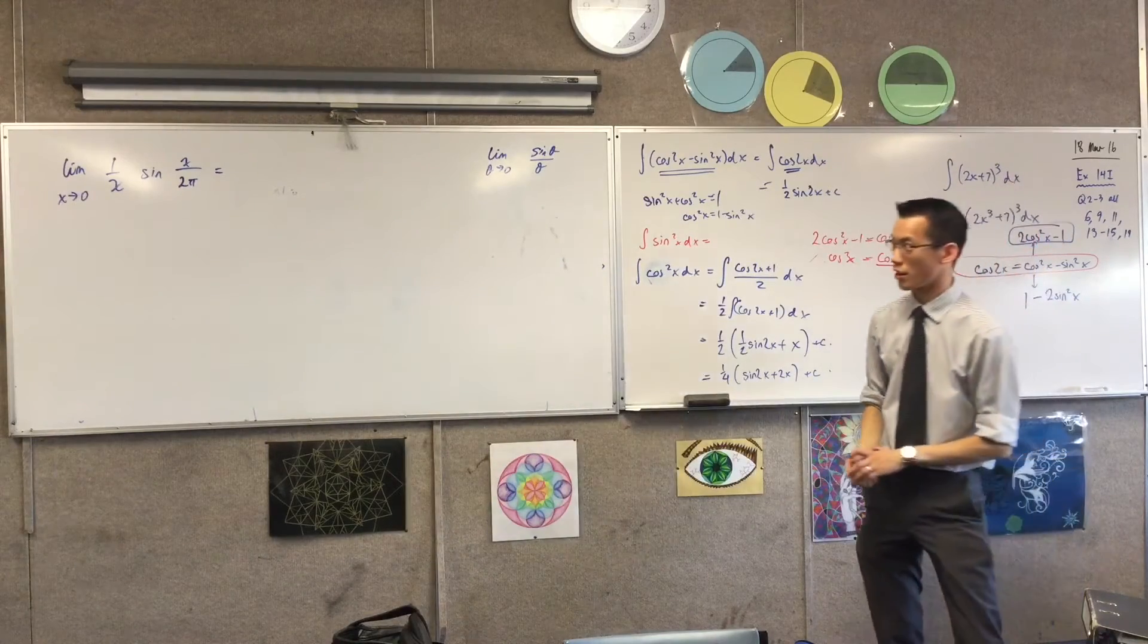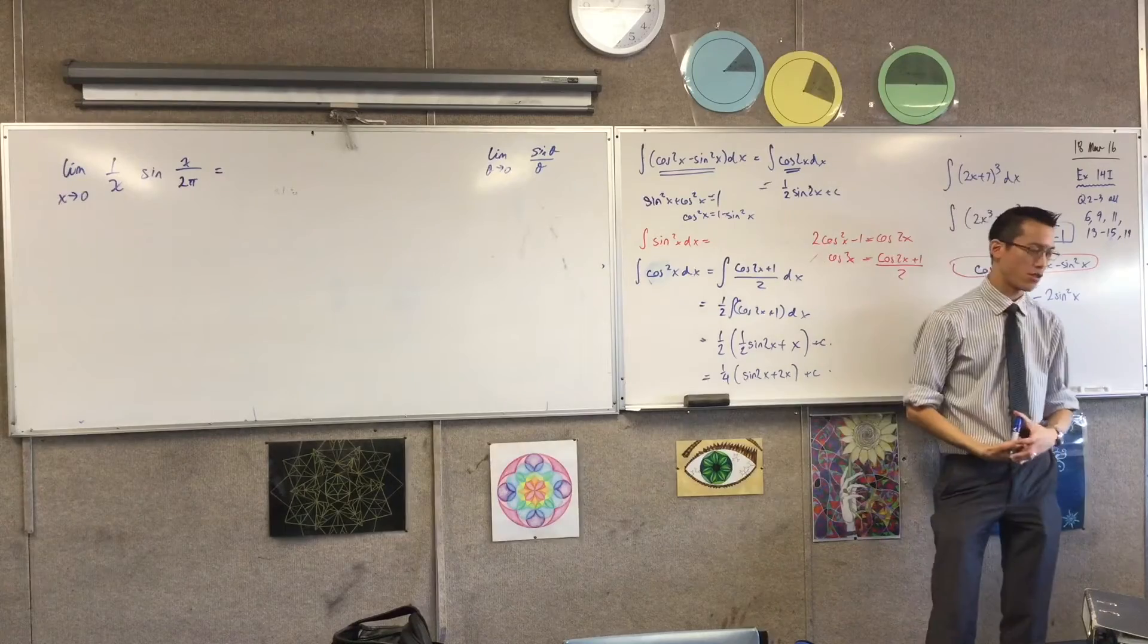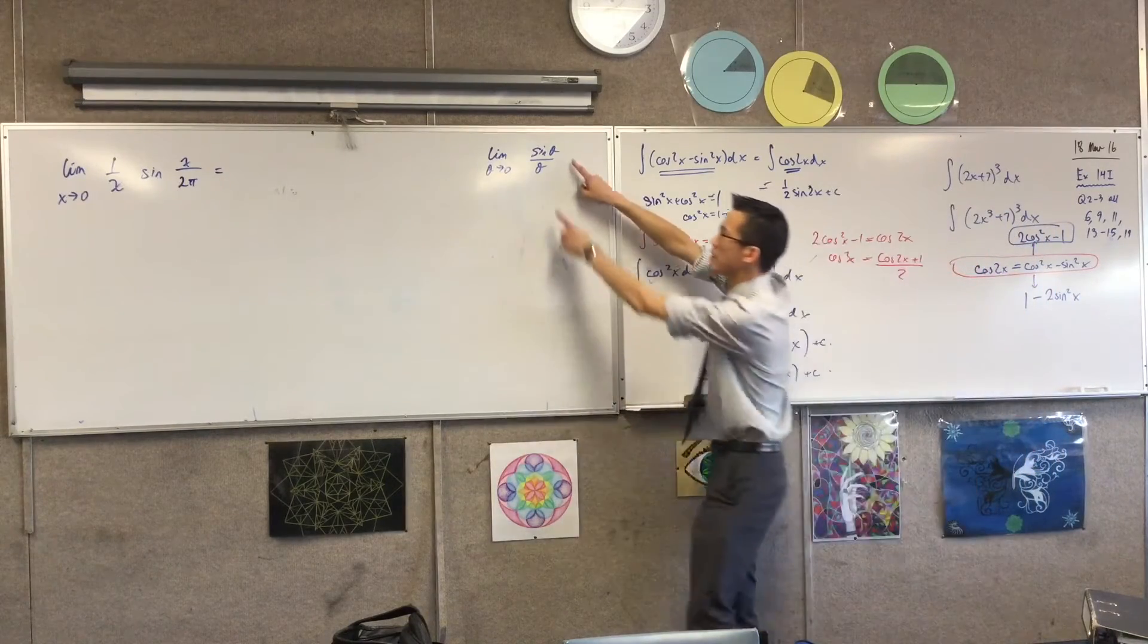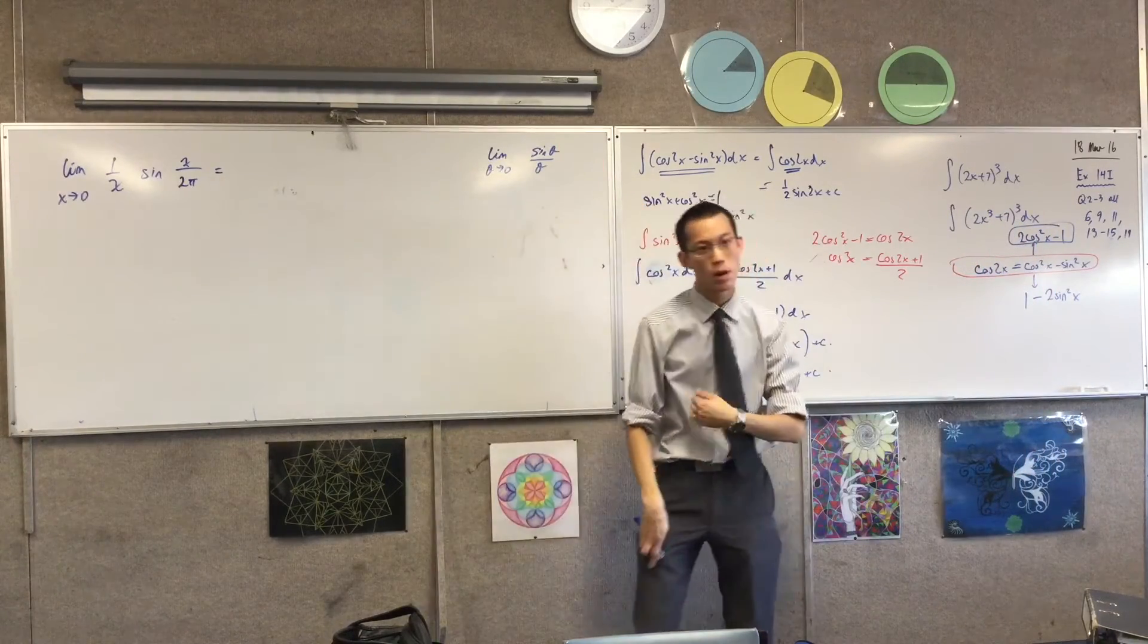Theta could be 2x, or it could be x times pi, or it could be x over 2, or whatever. The important thing is that I want the same thing in both spots.